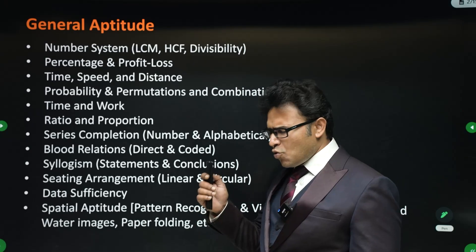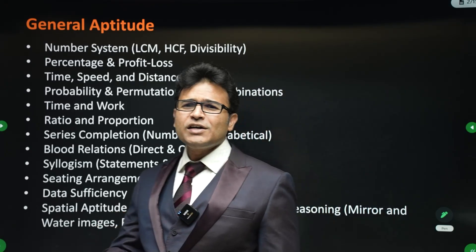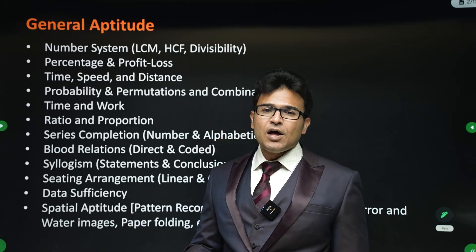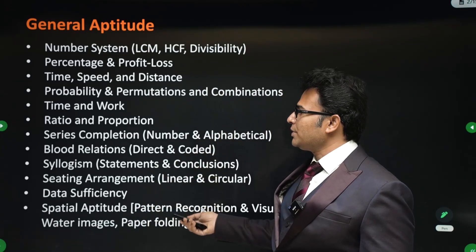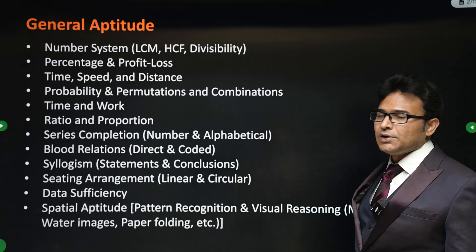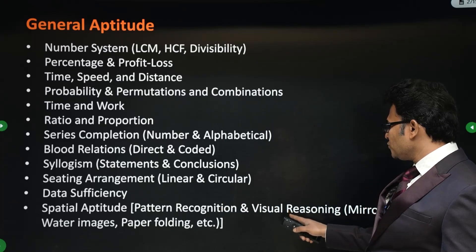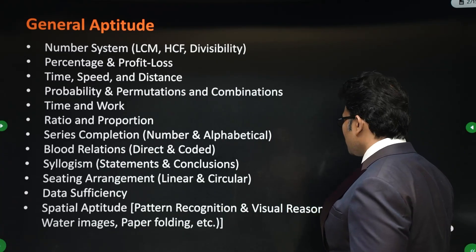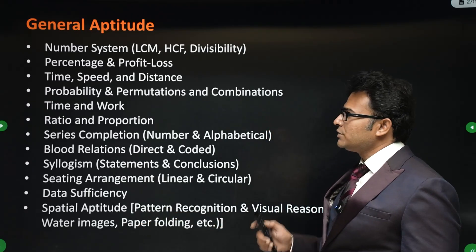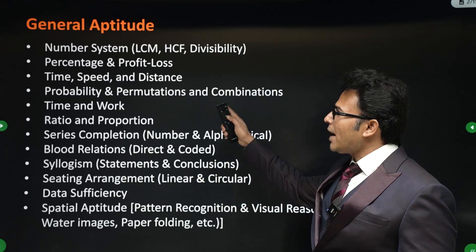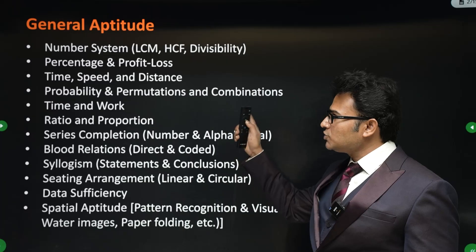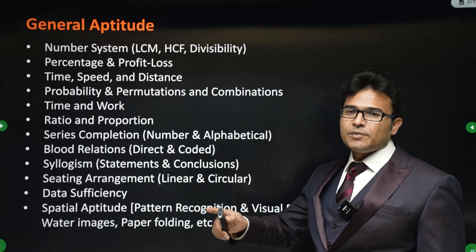First is aptitude — it is the most scoring subject, so you should not leave out anything. But if you don't have time, out of 40 topics I've selected 11. The most important topics for aptitude are: number series, aptitude pattern recognition, visual reasoning, mirrors and water images, and paper folding. Focus on these 11 and you will get marks.